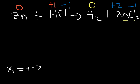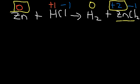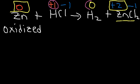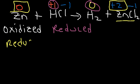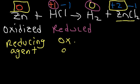The oxidation number for zinc increased from 0 to +2, so zinc was oxidized — it lost 2 electrons. The oxidation state for hydrogen decreased from +1 to 0, so it was reduced; the hydrogen ions gained electrons, which is associated with reduction. The substance that is oxidized is also known as the reducing agent, and the substance that is reduced is the oxidizing agent.